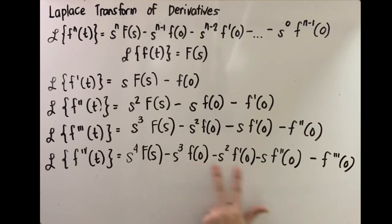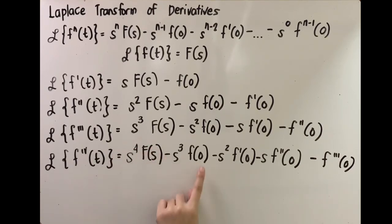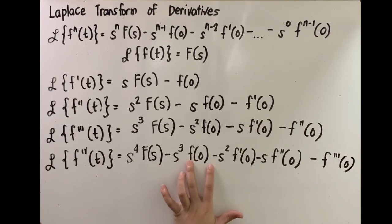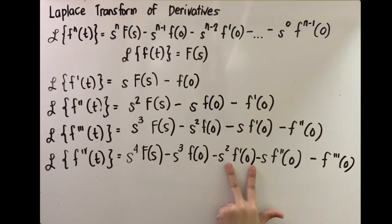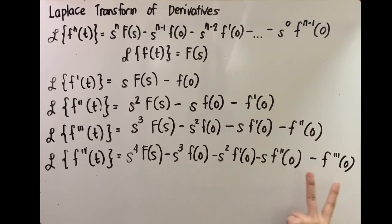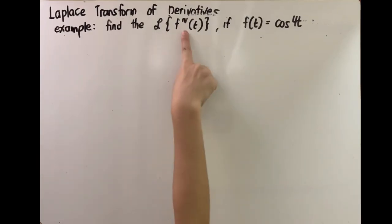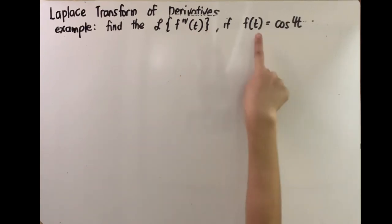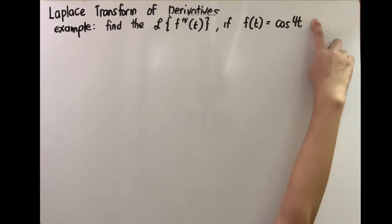Make sure you understand what these notations stand for. F of 0 means the original function f of t, where the independent variable t is replaced by 0 — solve it and substitute it into the formula. You get the first derivative of f of t, substitute t with 0, and substitute your answer. So let's have an example: we're asked to find the Laplace transform of the fourth derivative of f of t.